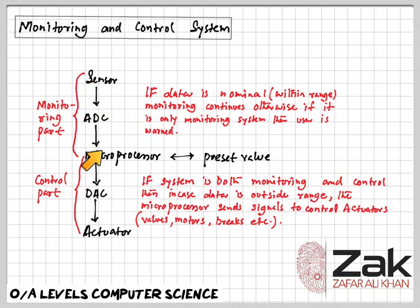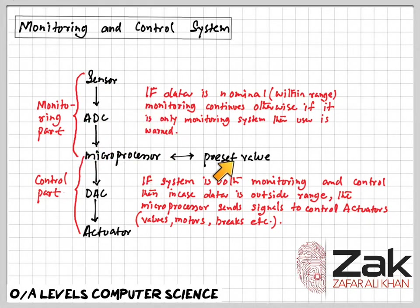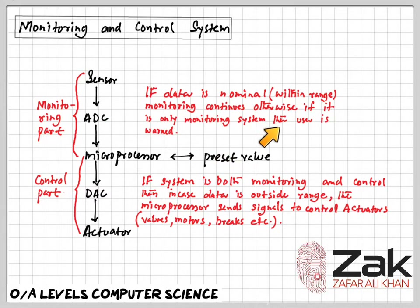From sensors to the microprocessor is said to be the monitoring part, and from microprocessor to the actuator is said to be the control part. Whatever values are being received from sensors to the microprocessor are also being logged. If the data coming in is within the range of the preset values, it is said to be nominal and monitoring continues. If the data goes beyond the nominal values, then the microprocessor takes action with the help of an actuator.